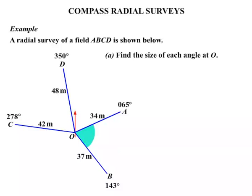So let's find this angle firstly. Basically we're going from 065 degree bearing to 143 degree bearing. So we find the difference. We do a subtraction. We find then that that angle is 78 degrees.